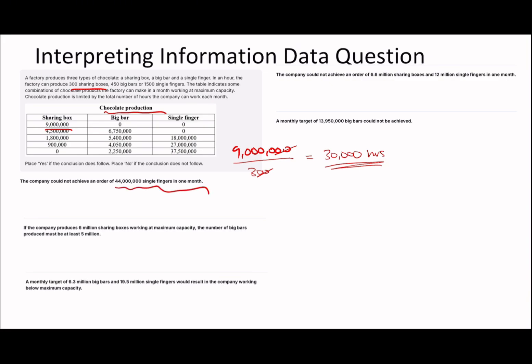Sub-question 1: a company could not achieve an order of 44 million single fingers in one month. 44 million divided by 1,500 (cancelling zeros) gives 440,000 divided by 15 = 29,333 recurring hours. That's wrong - it could be achieved because you have 30,000 hours in total.